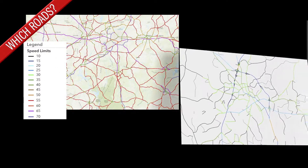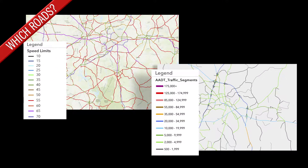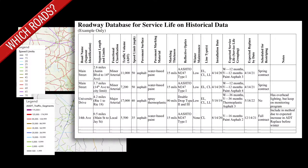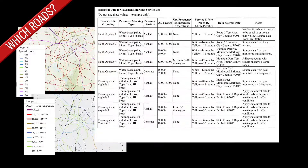Like the other methods, the first step is to decide which roads and markings your agency will include in its method.